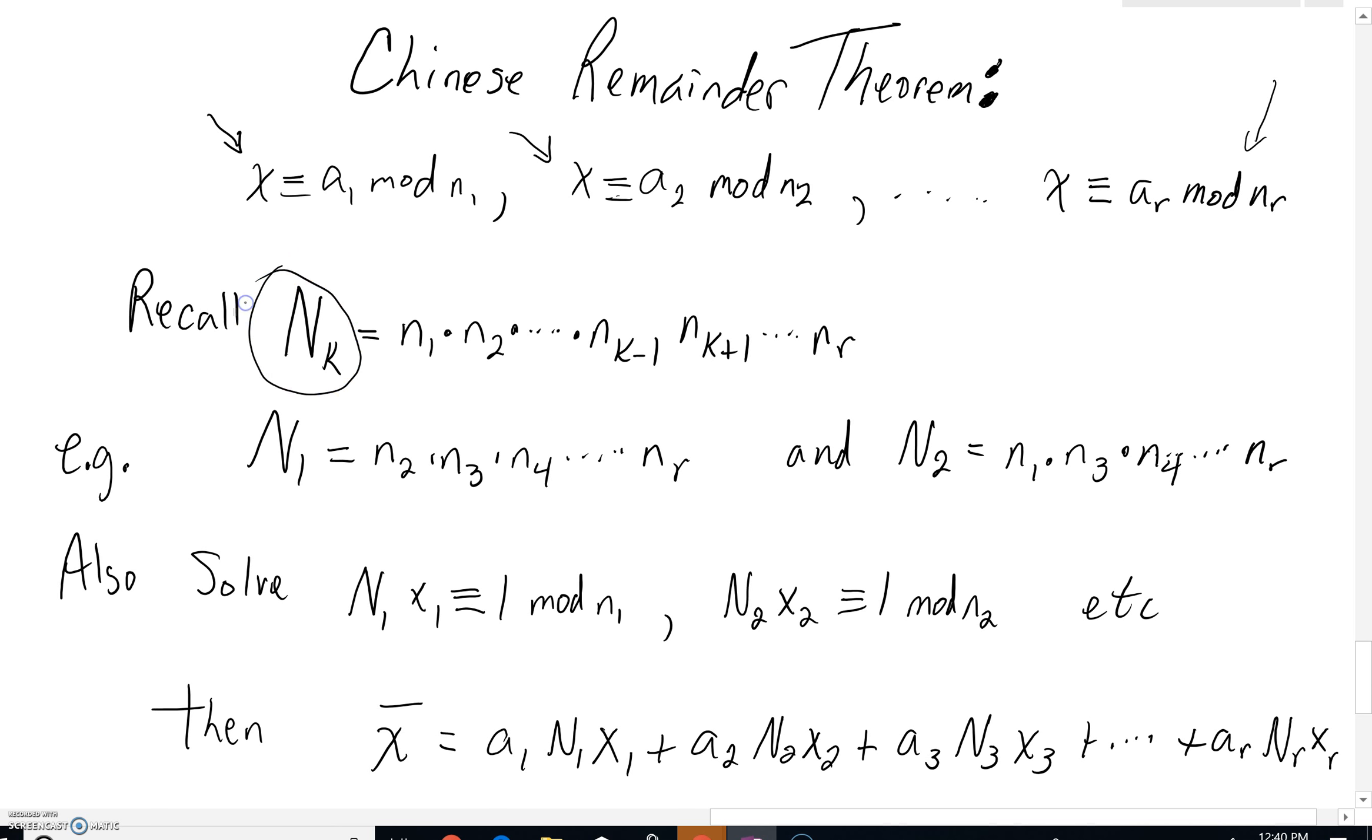Remember, capital N sub k would be all of those mods multiplied together except the k-th term. So if you've got n sub k, you're going to see that conspicuously absent would be the k-th mod.